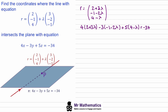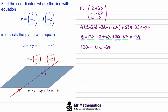We can expand out these brackets and solve the equation for λ, then substitute λ back into the equation of the line to give us the exact point P. Expanding the brackets and collecting λ terms separately from the constant terms, we get 13λ plus 31 equals negative 34.